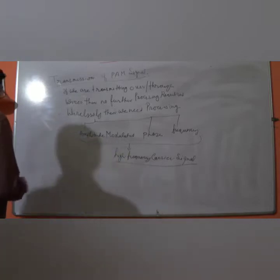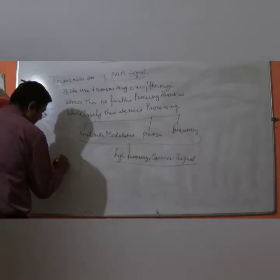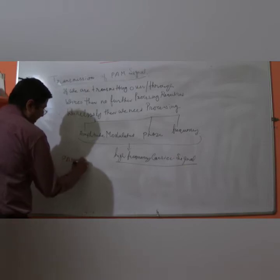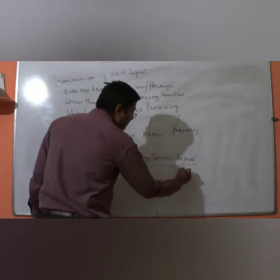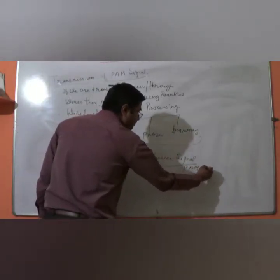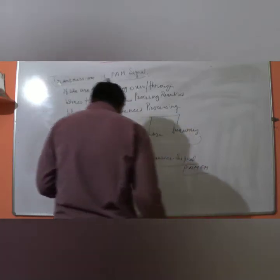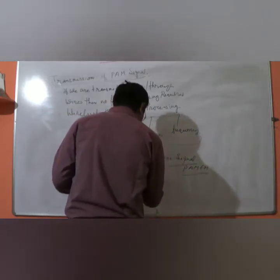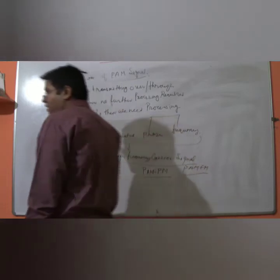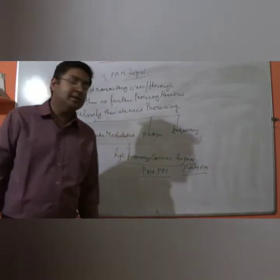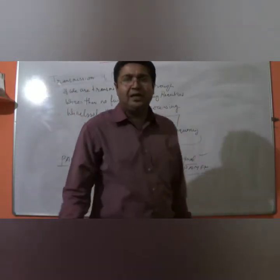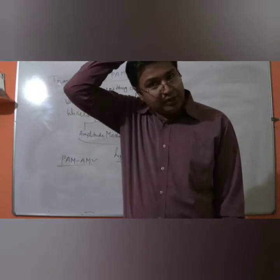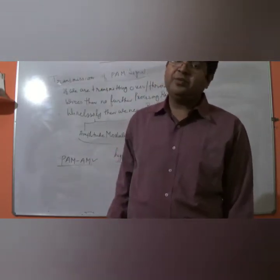Whenever we are sending via amplitude modulation, this system is called PAM-AM. Whenever we use frequency modulation it is called PAM-FM, and if we use phase modulation it is called PAM-PM. The naming is done accordingly based on the particular modulation technique used. Now let's take one example and solve a particular equation — a question based on this AM signal, as numerical questions based on all these concepts are asked in exams.